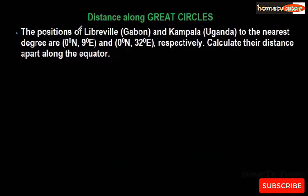The positions of Libreville, Gabon, and Kampala, Uganda, to the nearest degree are 0° North 9° East and 0° North 32° East respectively. Calculate the distance apart along the equator. First, we should notice from the values given that the latitude 0° North is the equator. Let us quickly sketch the diagram.